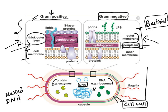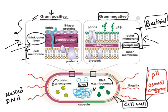Cell wall is very essential for bacterial survival. The cell wall will protect bacteria from external pH, from osmosis, and from enzymes like lysozymes present in human blood that might kill the bacteria. So cell wall is essential for bacterial survival.